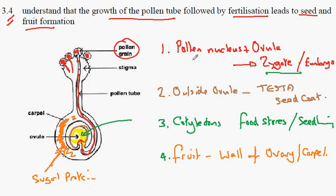So four things. Fertilization, seed coat forms, food store inside the seed called the cotyledon and the development of the wall of the ovary or carpel.